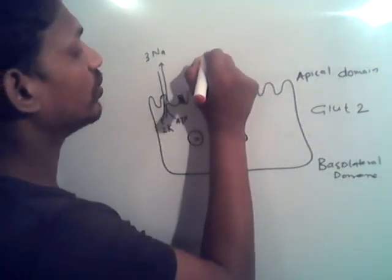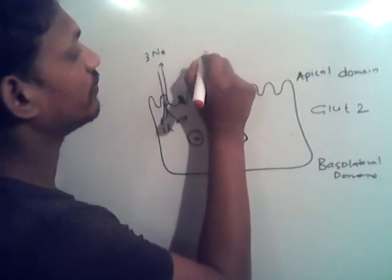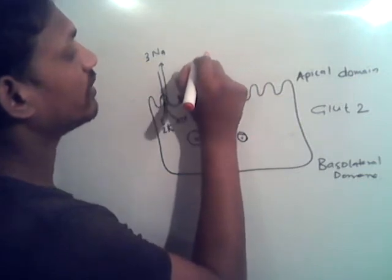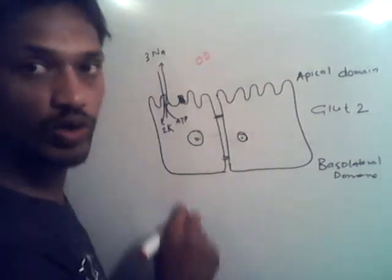Here is the glucose molecule. There is a low concentration of sodium inside the cell. The higher concentration of sodium is outside the cell and the lower concentration of glucose is inside.